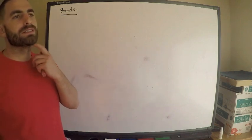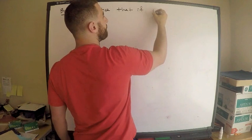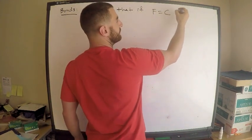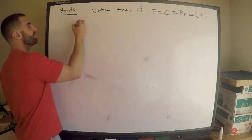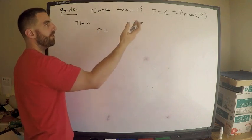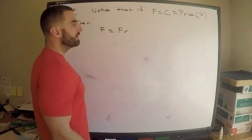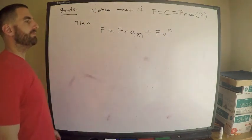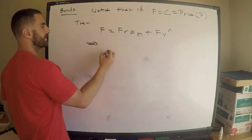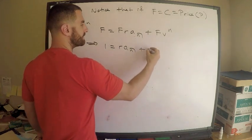Notice that if the face value F is equal to the redemption value, which is equal to the price P, then we can write: F equals the coupon payments over n periods plus the redemption value discounted n periods. Dividing everything by F, this immediately gives us: 1 equals R·a(angle n) plus V to the n.